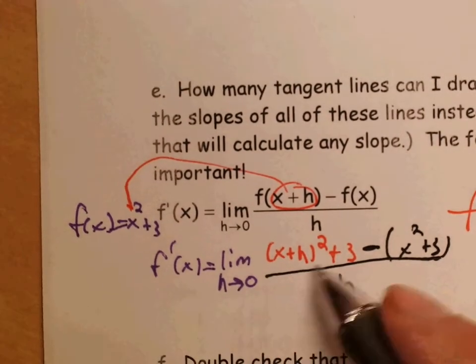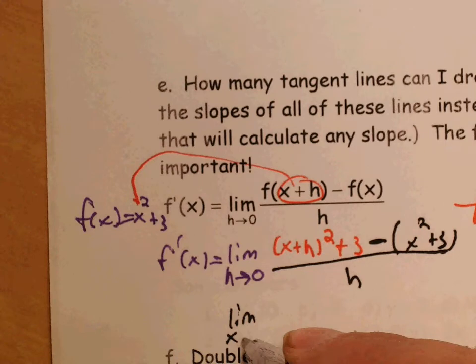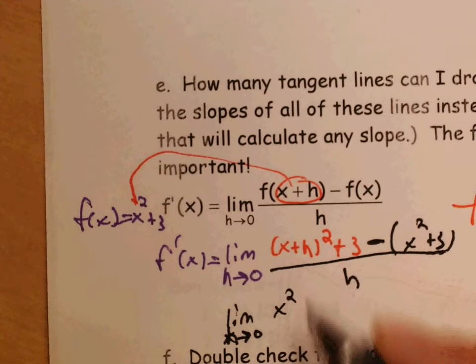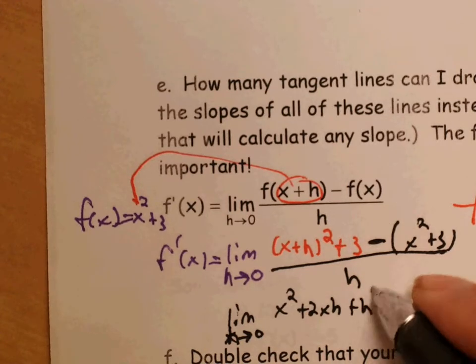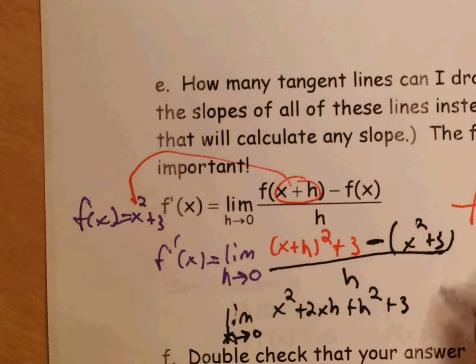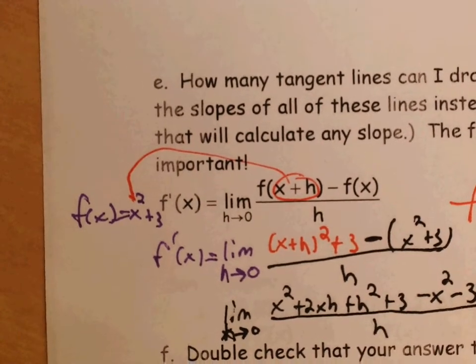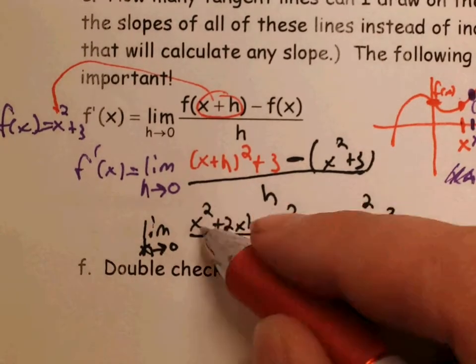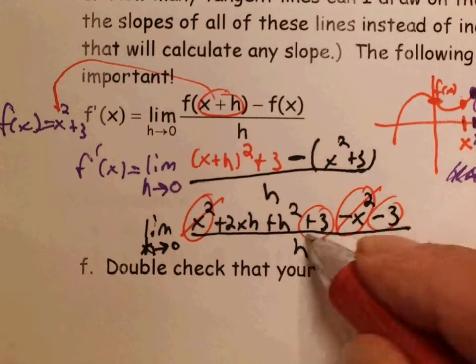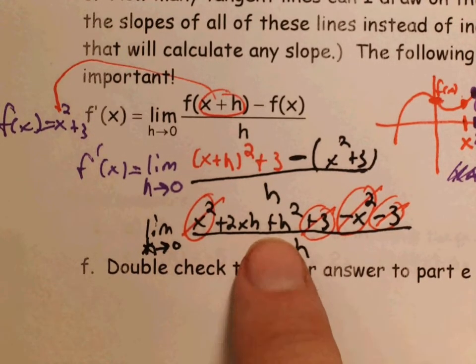We need to simplify this. Right now, if we plugged in h equals 0, we would get 0 over 0. We're going to expand this binomial. Remember that we have a binomial trick, which says that if you want to square a binomial, you square the first term, multiply these two together and double them, and then square the last one. I'm going to rewrite everything else. We need to make sure we distribute this negative. We're subtracting all of f of x, so it's minus x squared minus 3, divided by h. And there are going to be some things that cancel. Everything without an h is going to cancel out, which is pretty nice. x squared minus x squared cancels, plus 3, minus 3, cancels. So what we're left with is 2xh plus h squared over h.